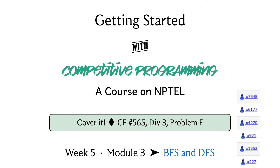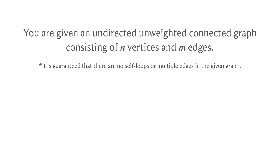This problem doesn't have too much of a backstory so let's just get to it. We have a very specific task. What we are given is an undirected unweighted connected graph which has n vertices and m edges. This is also a simple graph, so there are no self-loops or multiple edges.